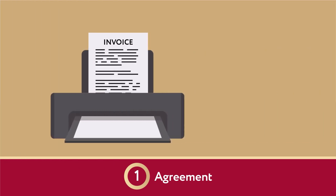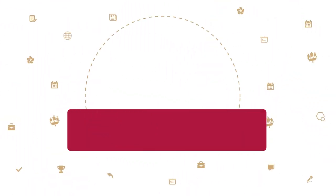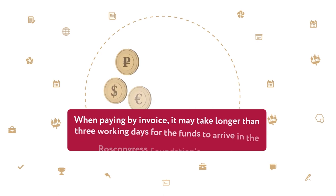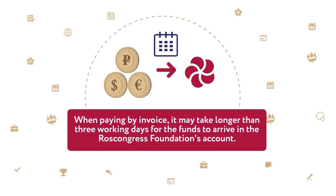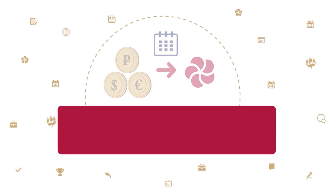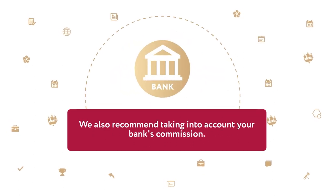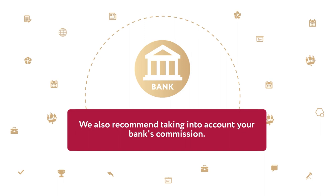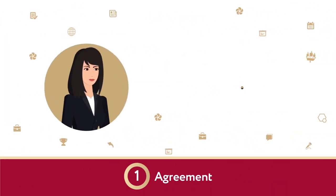To pay by invoice, print the invoice and visit the bank to make the payment. When paying by invoice, it may take longer than three working days for the funds to arrive in the Ross Congress Foundation's account. We also recommend taking into account any commission that may be charged by your bank.